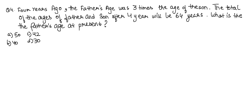Question number four: four years ago, the father's age was 3 times the age of the son. The total of their ages after 4 years is 64 years. What is the father's present age? Let the son's current age be x and the father's current age be y.